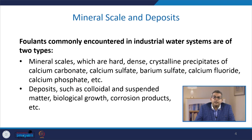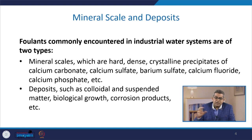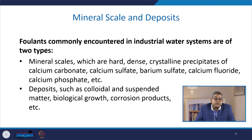Foulants commonly encountered in industrial water systems are of two types. The first type is mineral scales, which are hard, dense, crystalline precipitates of calcium carbonate, calcium sulphate, barium sulphate, calcium fluoride, calcium phosphates, etc. Knowledge of their concentration and controlled removal is essential.